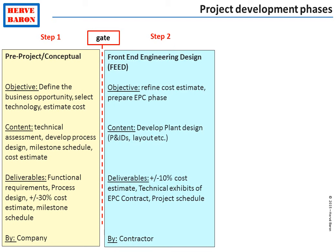Step two is called the front-end engineering design. It involves a specialist contractor — so this time the oil and gas company does not do this internally, but enters into a service contract with a contractor specialized to develop such preliminary plant design, whose objective is to refine the cost estimate up to a precise level of plus or minus 10%, which is the level required to take the final investment decision at the end of step two.